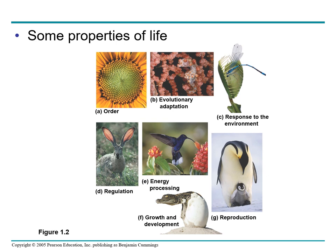Then we have response to the environment. The Venus flytrap closed its trap rapidly in response to the environmental stimulus of a grasshopper landing on the open trap. This is the response to the environment. Next is regulation. The regulation of blood flow through the blood vessels of this jackrabbit's ear helps maintain a constant body temperature by adjusting heat exchange with surrounding air.